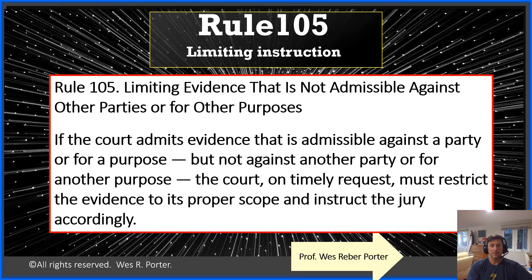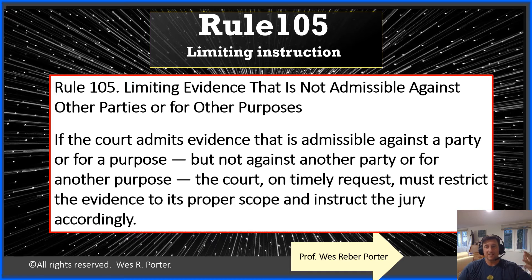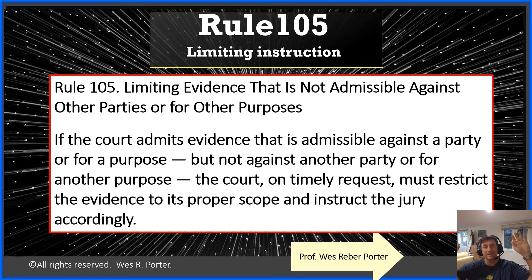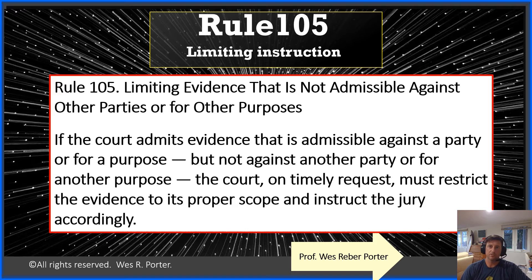So if you can imagine the opponent, under a lot of the different rules — think of character evidence, think of impeachment evidence — the opponent is raising their hand saying objection. They're trying to do something for some bad purpose, an improper purpose that they're not allowed to. And you can almost picture at sidebar the proponent with two hands up in the air saying, 'Your Honor, I'm not trying to do this for that bad purpose the opponent suggests. I'm trying to do it for some other purpose — some good purpose that's allowed under the rules.'